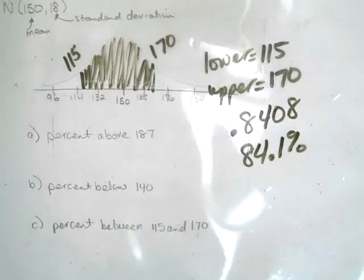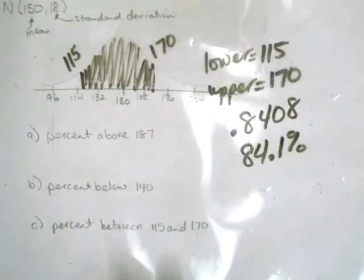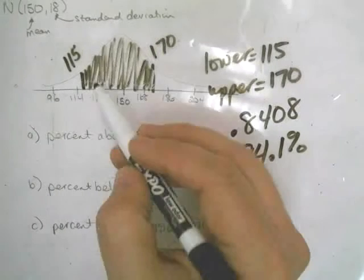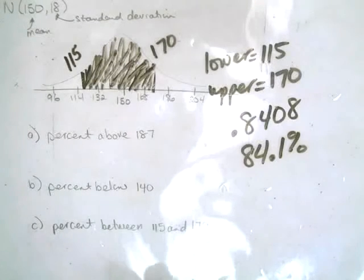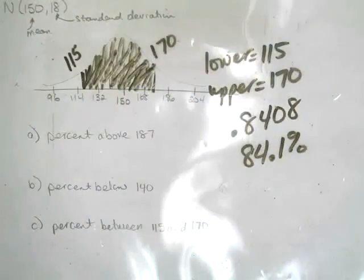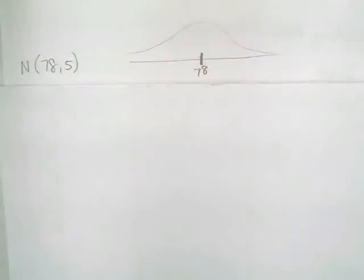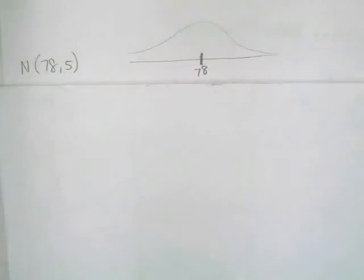Remember, the first thing you do is draw the curve and shade the region. Shading the region gives you a visual picture of what's above, below, and what the lower and upper bounds are. Let's look at another example where we work backwards — instead of finding the percentile, I'll give you the percentile and you find the cutoff value. We're working with a normal model with a mean of 78 and a standard deviation of 5.